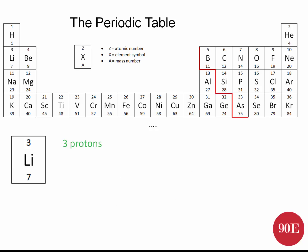Let's look at lithium. Lithium has 3 protons because the atomic number is 3, which means it must have 3 electrons. To work out the neutron number, we look at the mass number: 3 protons plus x neutrons equals 7. Therefore the neutron number must be 7 minus 3, which equals 4.